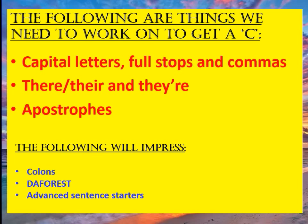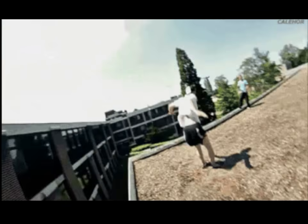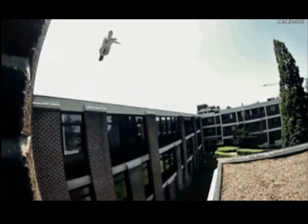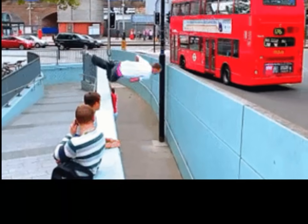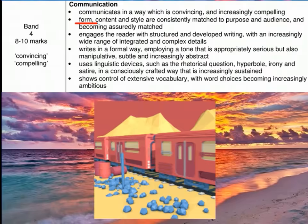We're going to look at the things needed to impress the examiner later in the video. We want to do our commas and all the basics, but also use a few more things to get really high grades. If you don't get your capital letters, commas, apostrophes, and homophones right, you'll really struggle. You need the basics to get a C grade.